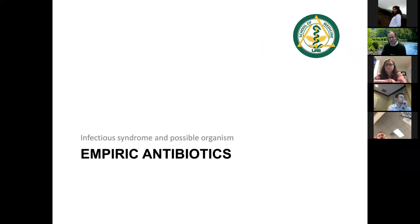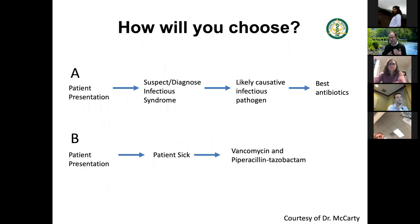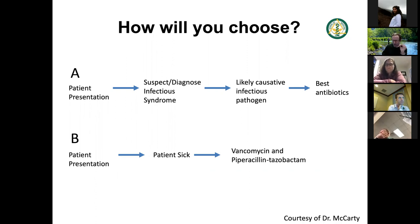Empiric antibiotics — briefly. The infectious syndromes are numerous: meningitis, encephalitis, pharyngitis, otitis, URIs, pneumonia, empyema, endocarditis. If I can define the syndrome, I can figure out where to take cultures and what to do. In empirics, you have a patient with a suspected infectious syndrome. You think about what it could be — bacterial versus viral — and put in the best antibiotics. Or you do what the ED does: patient presents sick, vancomycin, move on. We want to be the thoughtful type-A folks, not type-B.